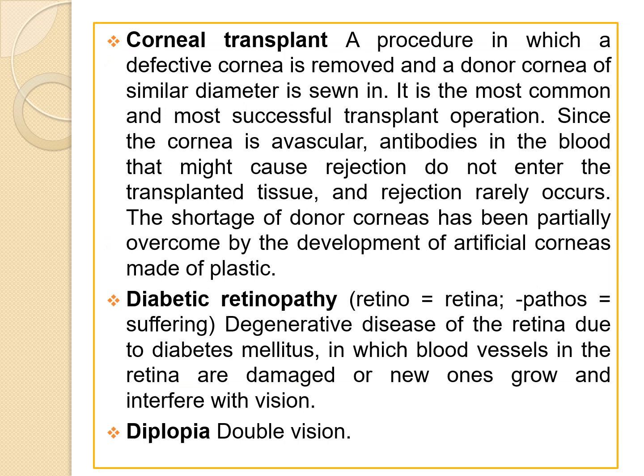The next term is corneal transplant — a procedure in which a defective cornea is removed and a donor cornea of similar diameter is sewn in. It is the most common and most successful transplant operation. Since the cornea is avascular, antibodies in the blood that might cause rejection do not enter the transplanted tissue, and rejection rarely occurs. The shortage of donor corneas has been partially overcome by the development of artificial corneas made of plastic.